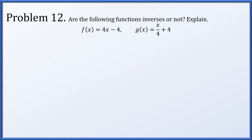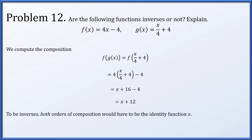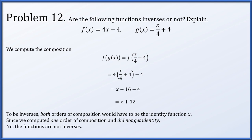Problem 12: are f of x equals 4x minus 4 and g of x equals x over 4 plus 4 inverses? Let's compute f of g of x: f of x over 4 plus 4 equals 4 times the quantity x over 4 plus 4 minus 4. Distributing and simplifying gives x plus 12, not x. Since we didn't get the identity function, they are not inverse functions.